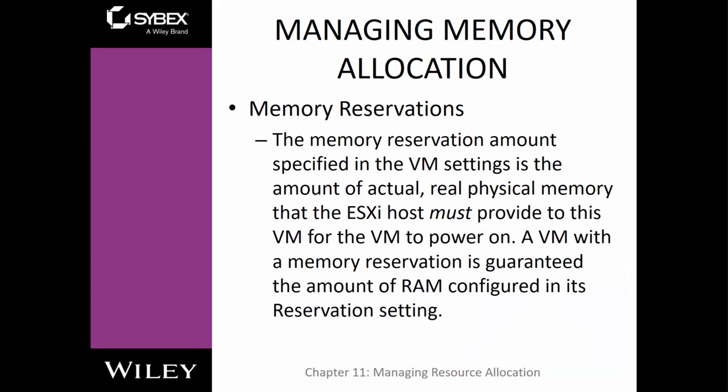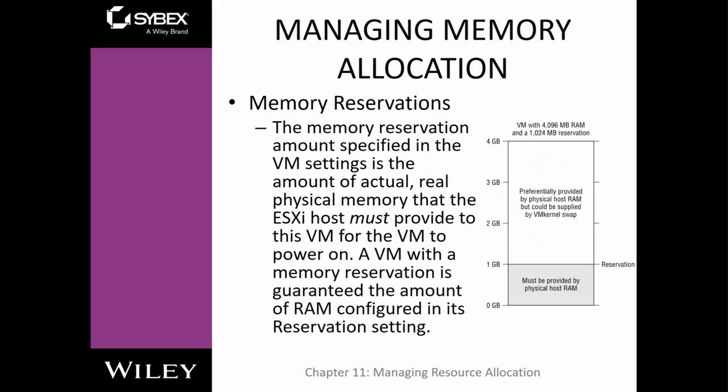Memory reservations cover how much memory you assign to a VM and how much of that assigned memory you are going to reserve — basically guarantee to a particular VM. Normally, I don't see a lot of people reserving resources for VMs; typically a lot of deployments just leave this default, but you can set it. A reservation is a guaranteed amount of resource configured on the reservation settings. For example, you may allocate 4 gigs and reserve 1 gig — you can use up to 4 gigs, but regardless of how much you're actually using, it's always going to have 1 gig reserved for you.